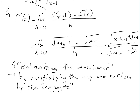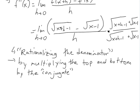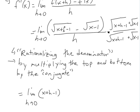When we multiply using the FOIL method, the middle terms cancel out. The first term gives us x plus h minus 1 — the square root is eliminated — and the last term gives us negative x minus 1, since those squares also eliminate the square roots.